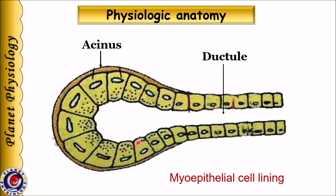Cells lining the acinus are called acinar cells. These are pyramidal in shape and contain zymogen granules in the case of serous acini, and mucous droplets in the case of mucous acini. Their secretion enters the lumen of the acini and is called primary secretion. It then flows through the ducts, where cells lining the ducts are cuboid in nature and they modify this primary secretion.